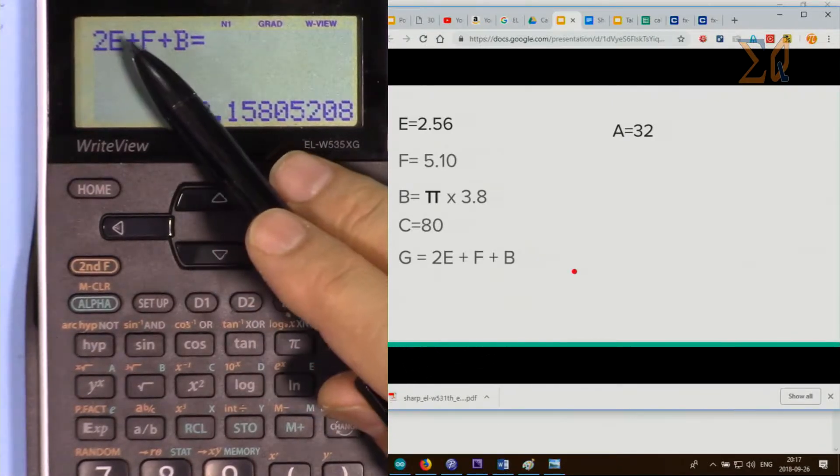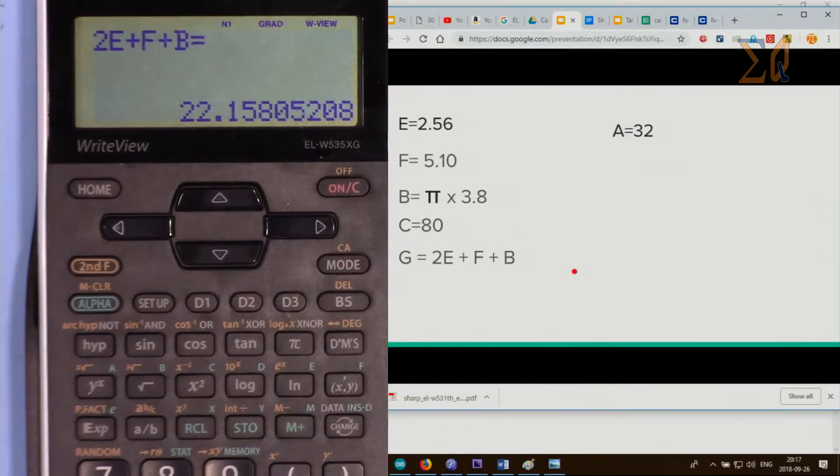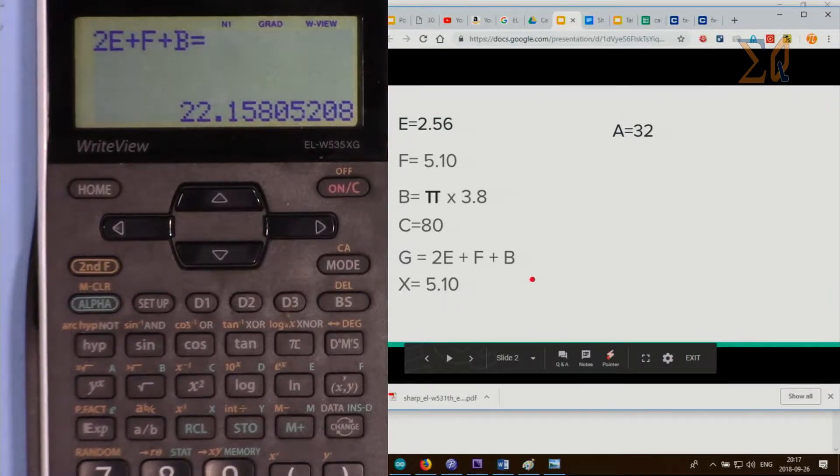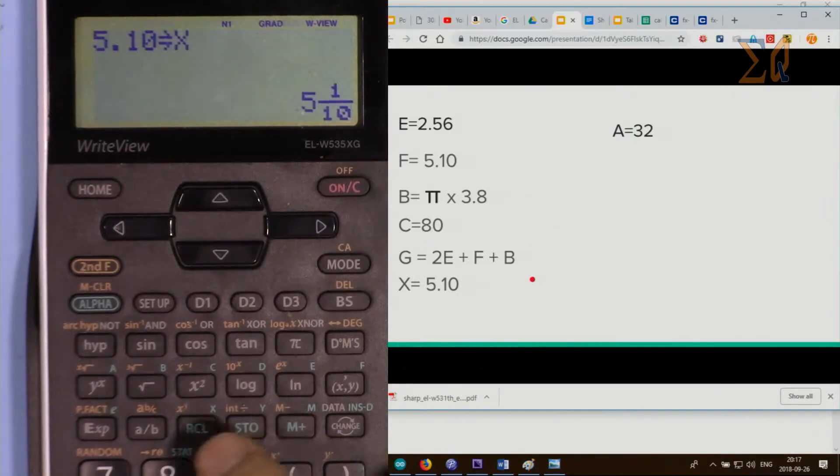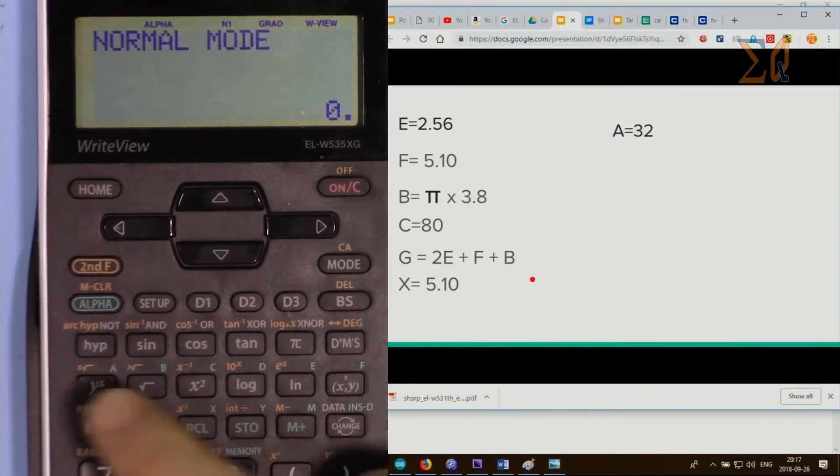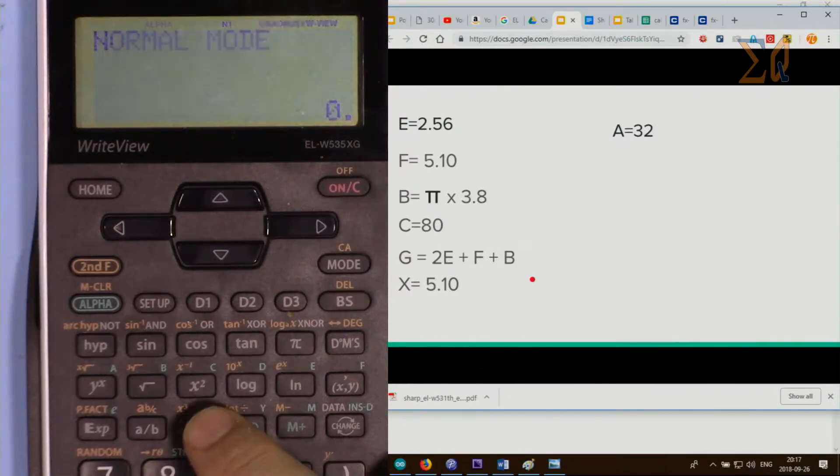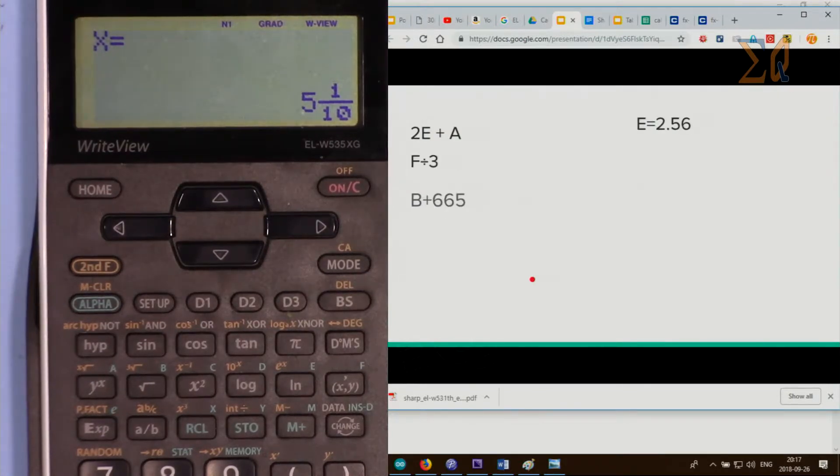Now let's store 5.10 into X: 5.10, store, and then X. In order to recall X, we press recall and then press the button. Because X is on the same button, I'm pressing it again. So this was a value from X.